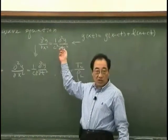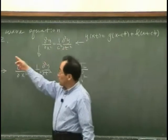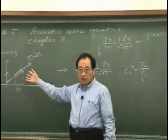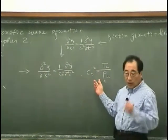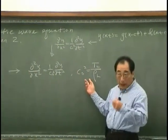Up to here, we didn't know what the Cs square is. And then we consider the infinitesimal element, and then we found that Cs square is TL over OL.